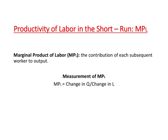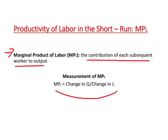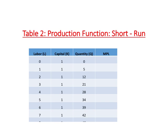Here is the formal definition of marginal product of labor, abbreviated as MPL: it is the contribution of each subsequent worker to output. We can measure it as the change in quantity divided by the change in number of workers. That gives us the marginal product of labor, or productivity of each worker. Here is table 2, which is essentially a copy of table 1 from the previous video, with the only new column being MPL — marginal product of labor.